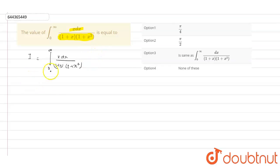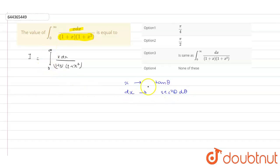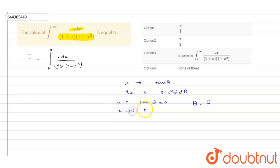We have to find the value of this integral. Let us substitute x with tan θ, so our dx will be equal to sec squared θ dθ. Now the limits are from 0 to infinity. When x equals 0, tan θ equals 0, so θ equals 0. When x equals infinity, tan θ equals infinity, which occurs at θ equals π/2.